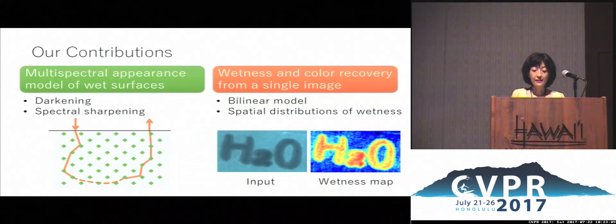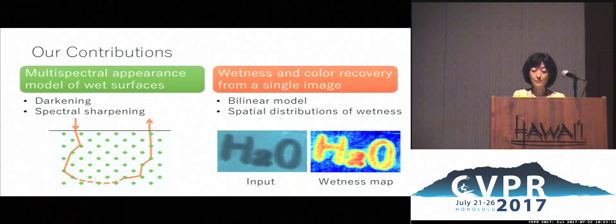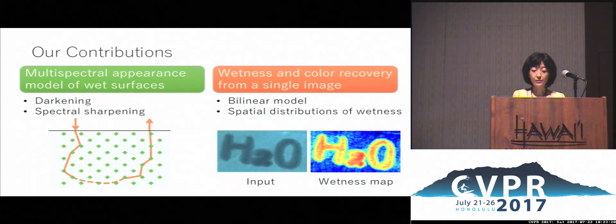We show that the interaction of light scattering and absorption by the liquid and the surface is bilinear, and derive a robust method for estimating the spatial wetness and the original surface colour.